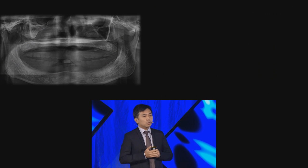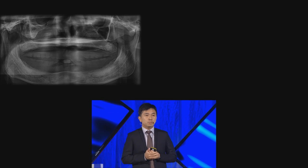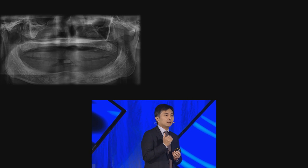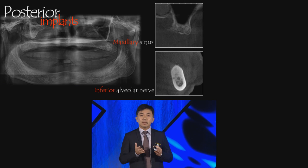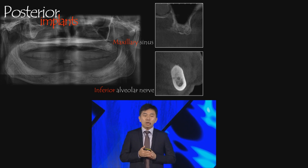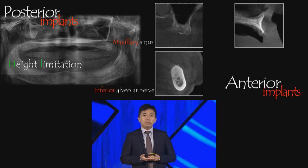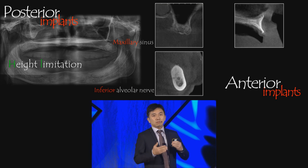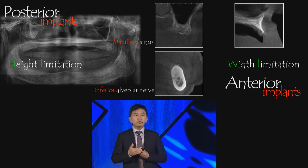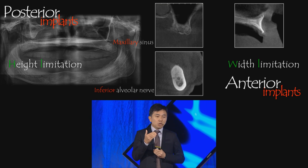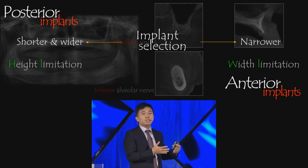As with any restorative treatment, there is a selection in terms of implants. From a prosthetic standpoint, in the posterior area we are limited by the sinus and by the inferior alveolar nerve, so a lot of the time we are dealing with height limitation. As we discuss with our surgeons, we realize we are moving more and more towards shorter and wider implants for the posterior.